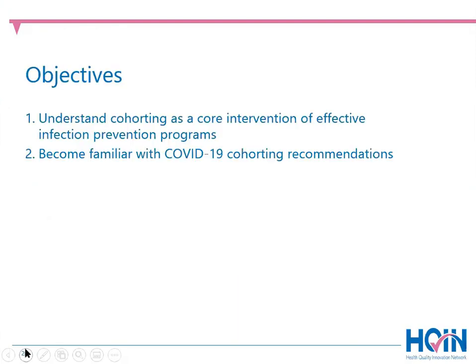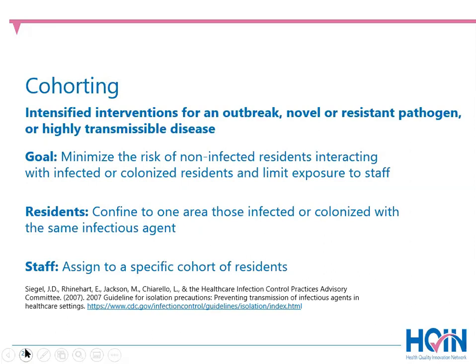Good afternoon, everyone, and thank you for taking the time today to join us. My topic is cohorting as a core intervention of an infection prevention program, currently being utilized during the COVID-19 pandemic. The goal of cohorting or isolation is to prevent the transmission of microorganisms from infected, colonized, and/or asymptomatic residents to other residents, staff, or visitors who may in turn transmit them to others or become infected themselves. Residents infected or colonized with the same infectious agent can be cohorted together to prevent spreading that infection to other non-infected residents. Staff are included in cohorting during outbreak situations like COVID-19 to a specific cohort of infected residents, which further limits the risk of spreading infection.